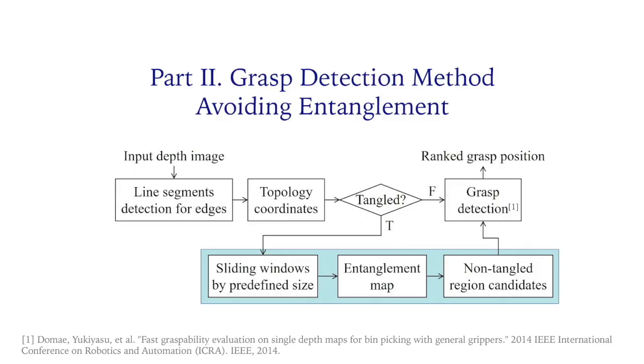Based on topological knowledge, we use a 3D camera to capture the depth map for the bin. First, we construct topology coordinates and use righty to determine if the bin has entangled parts. If no, the grasp is detected, only considering contact and conflict by graspability.